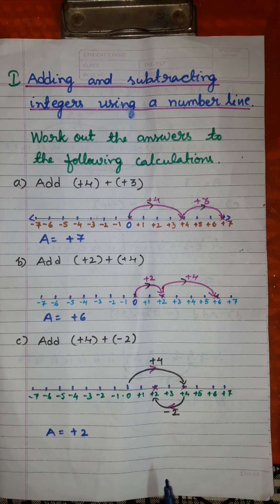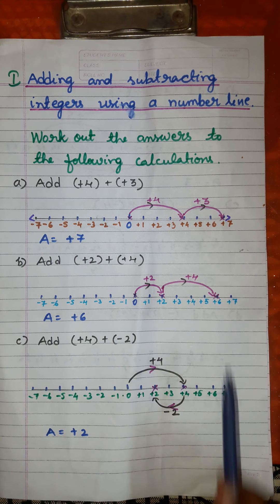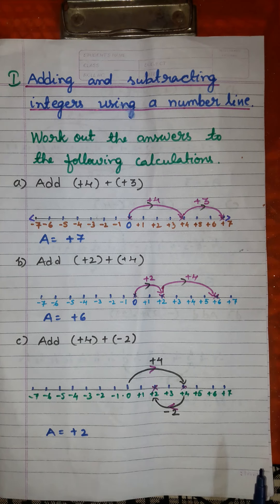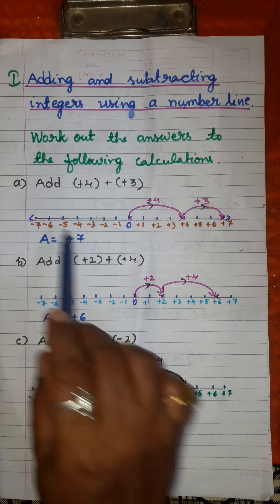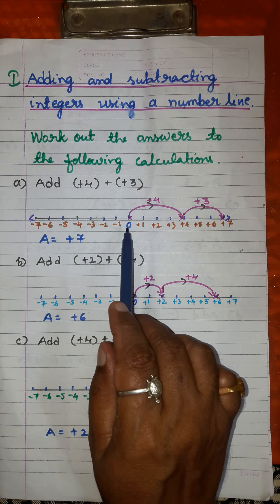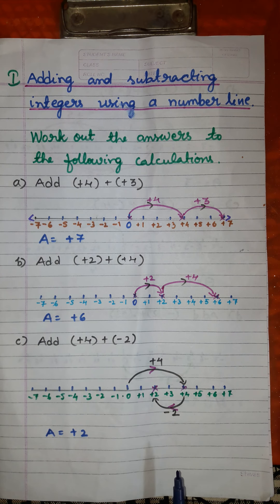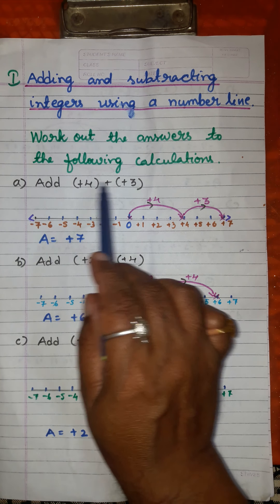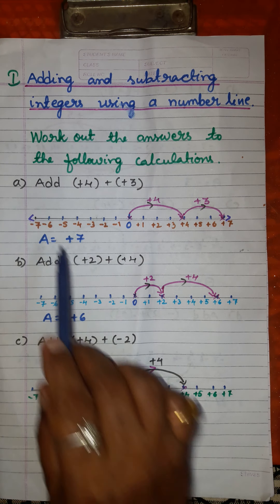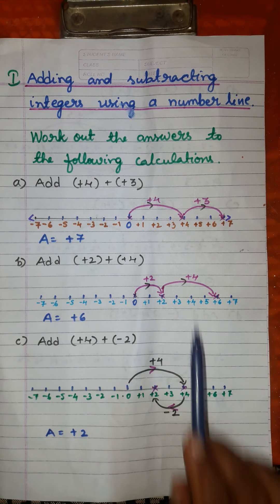Once again, the direction to the right of 0 is considered as positive and the direction to the left of 0 is considered as negative on the number line. How many numbers you have to mark depends upon the numbers given in the problem — if the numbers are more, you have to mark more numbers on the number line.